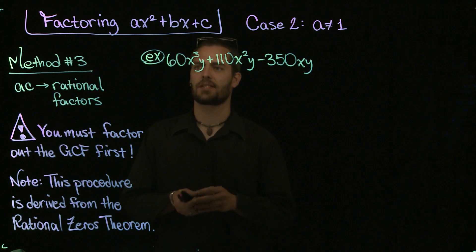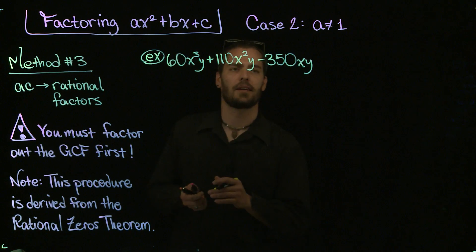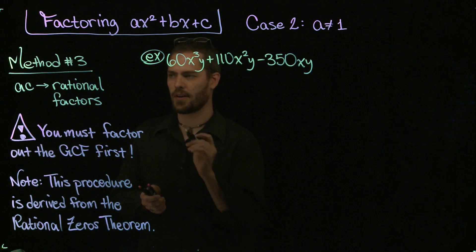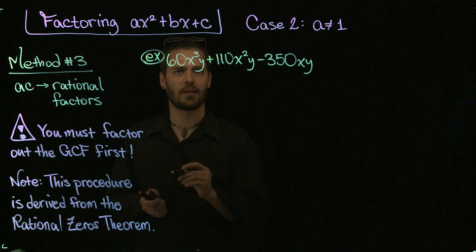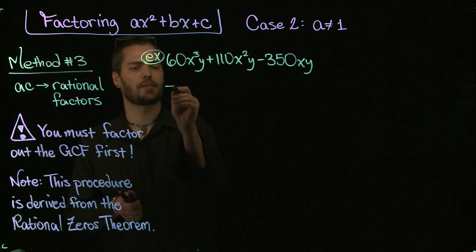Nevertheless, I feel justified in doing this because if a procedure works every time, what's wrong with that? So if some of your instructors have a philosophical issue with this, then just do it behind their back and show them the right answer in the end. But let us now look at this example using what I'm calling Method Number Three, and I'll explain it along the way. But the first step, taking my cautionary note, take out that greatest common factor.